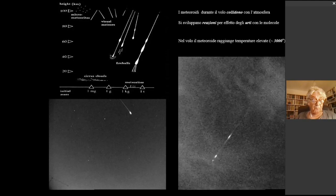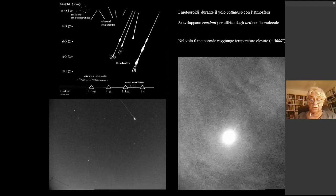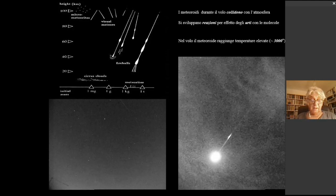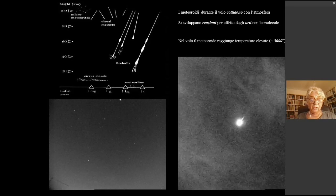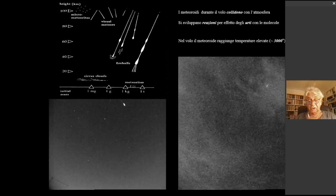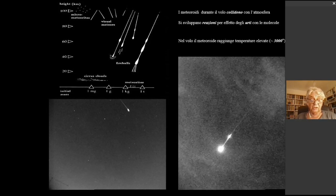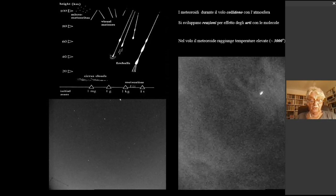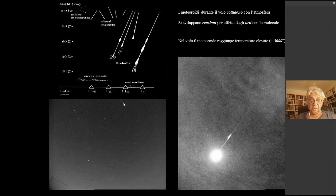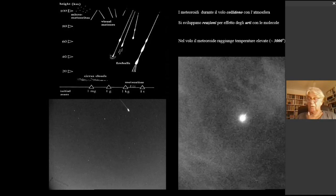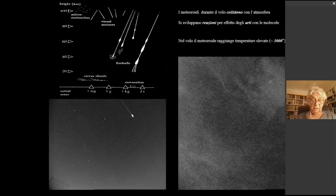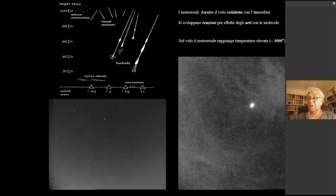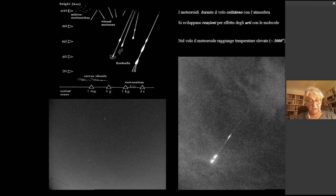Le particelle durante il volo collidono con l'atmosfera e si sviluppano delle reazioni per effetto degli urti con le molecole dell'aria. Gli atomi dell'aria si ionizzano in catena e danno luogo alla scia luminosa, a una colonna cilindrica di plasma, che è quello che vediamo. Nella corsa il meteoroide raggiunge temperature altamente elevate e avviene una continua perdita di massa: il fenomeno famoso dell'ablazione. In generale il meteoroide poi vaporizza a 80-70 km di altezza.